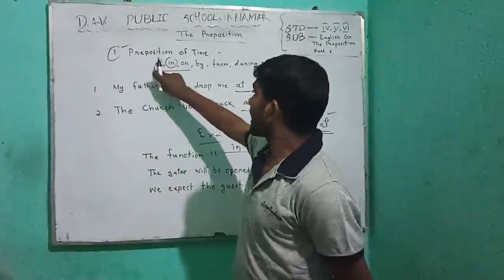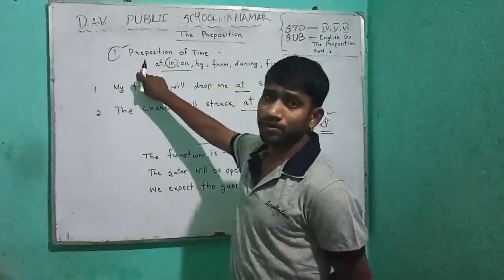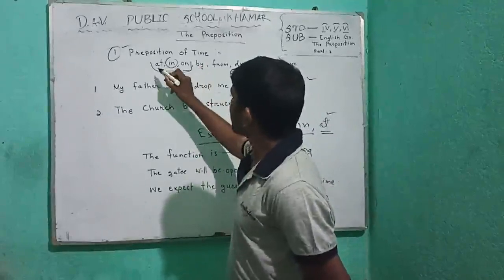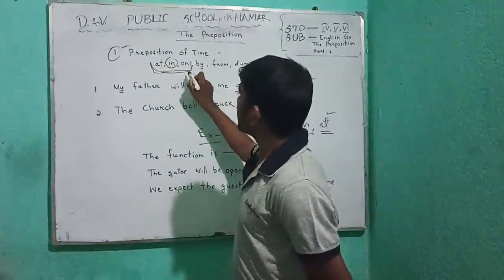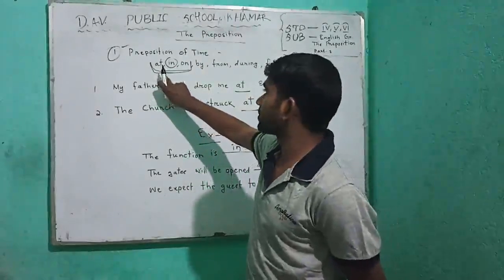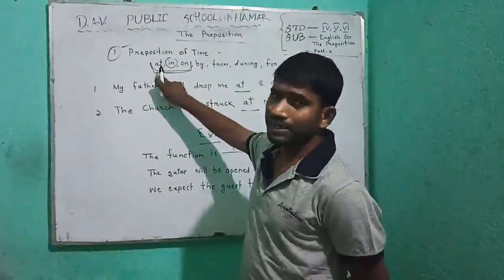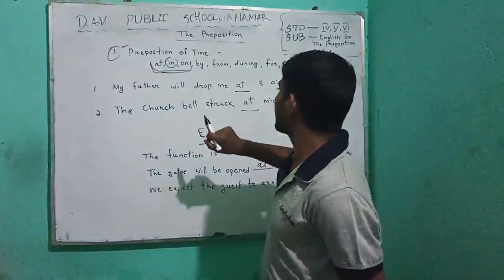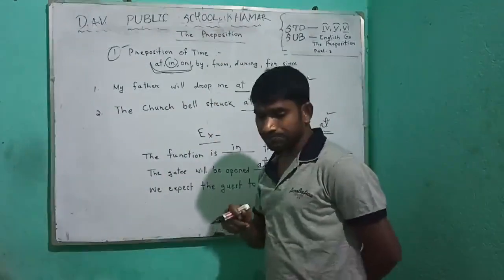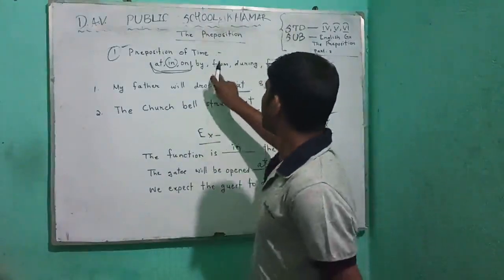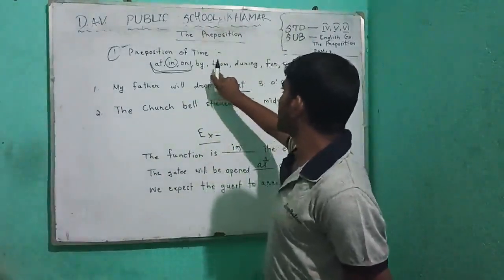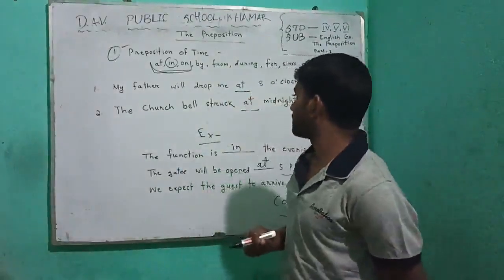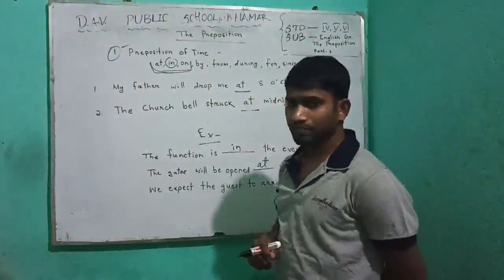So what did we learn in this class? We learned a type of preposition — prepositions of time — and specifically the use of 'at', 'in', and 'on'. In your next class, you will learn about the remaining prepositions of time. Thank you.